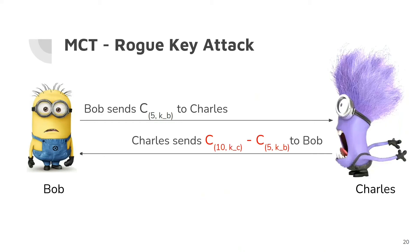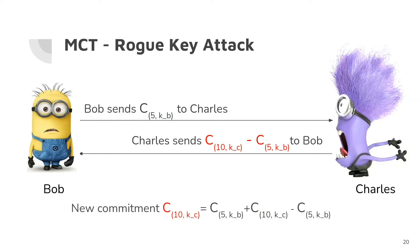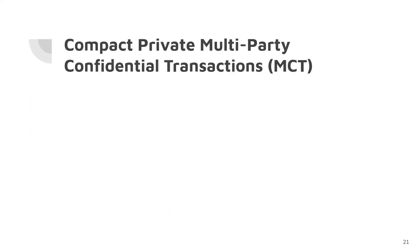Even though this protocol is correct, it is not secure due to a rogue key attack. First, Bob computes his commitment and sends it to Charles. Charles also creates a valid commitment, but as shown in the red-colored equation, Charles sends a rogue commitment to Bob. At the end, Bob and Charles agree to one rogue commitment, and Charles knows the complete secret key while Bob's secret key is not in the new commitment. Our aim is to build a multi-party confidential transaction protocol which is secure against these rogue attacks.